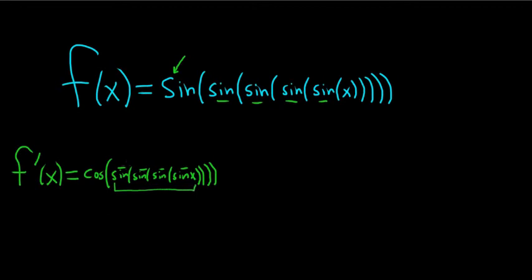So again, the derivative of sine is cosine. This will be cosine, and now we only have 3 sines — of sine of sine of sine of x. Two parentheses — one, two, three.